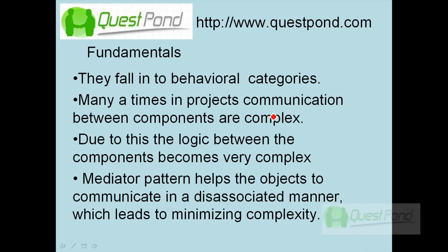Mediator is like a traffic police. You have component 1, component 2, component 3 in your project. All these components, if they want to interact with each other, will first send the message to the mediator. The mediator will then decide how the other components get affected. For instance, you have an order component, payment component, and product component. The order component first checks for payment and depending on that it books or orders a product.